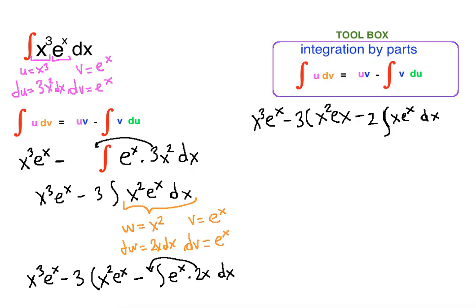Our final step is to use integration by parts one more time. We define a new variable — let's call it t — where t equals x and dv is e to the x. Then dt is 1 dx, the derivative of x. The anti-derivative of e to the x is again e to the x. We apply the formula: u times v minus the integral of v du, here for this integral.